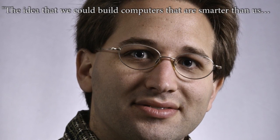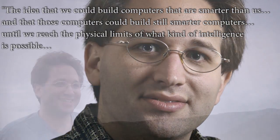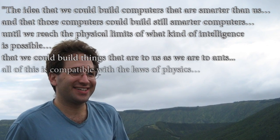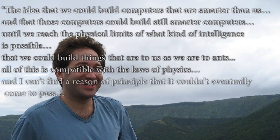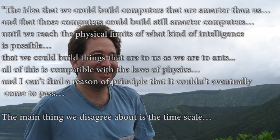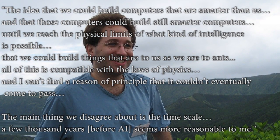Which is embodied in a quote by MIT computer scientist Scott Aronson in response to another researcher that predicted that artificial intelligence will happen within the next 100 years. Where he said, and I quote, The idea that we could build computers that are smarter than us, and that those computers could build still smarter computers, until we reach the physical limits of what kind of intelligence is possible, that we could build things that are to us as we are to ants. All of this is compatible with the laws of physics, and I can't find a reason or principle that it couldn't eventually come to pass. The main thing we disagree about is the time scale. A few thousand years before artificial intelligence seems more reasonable to me.